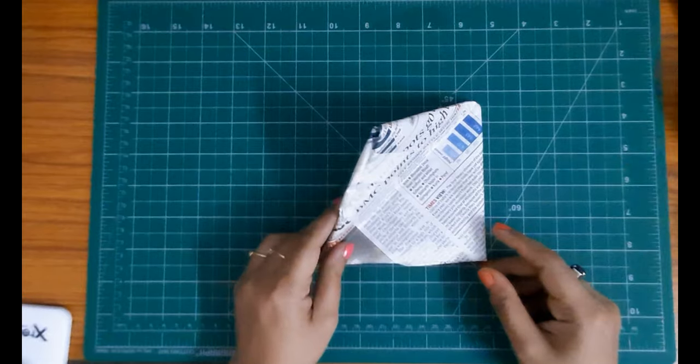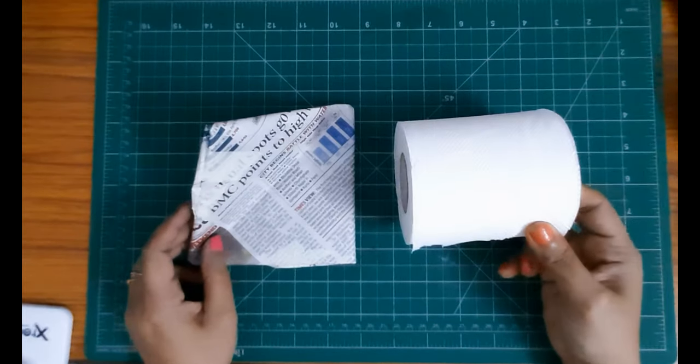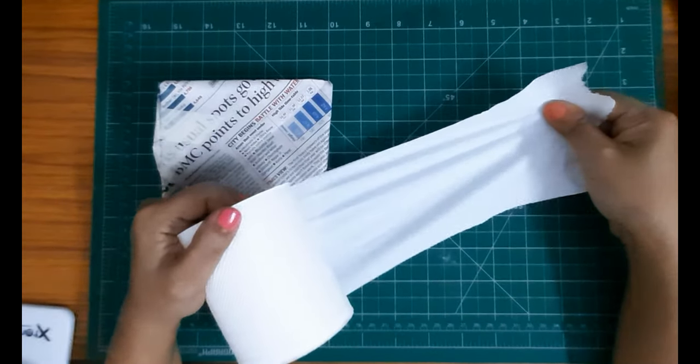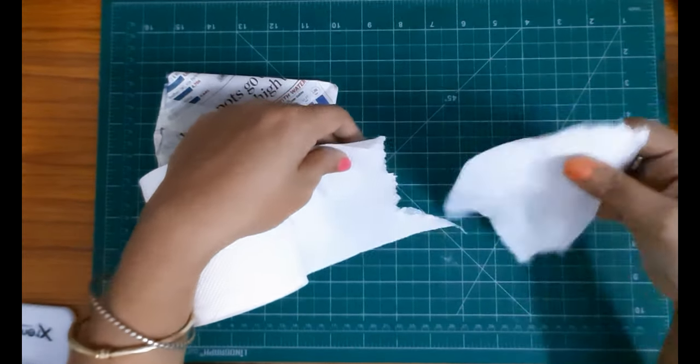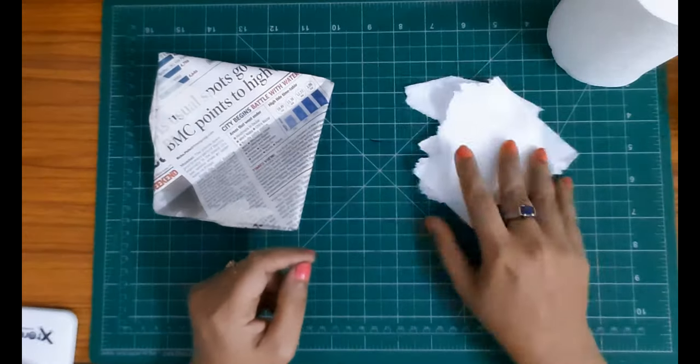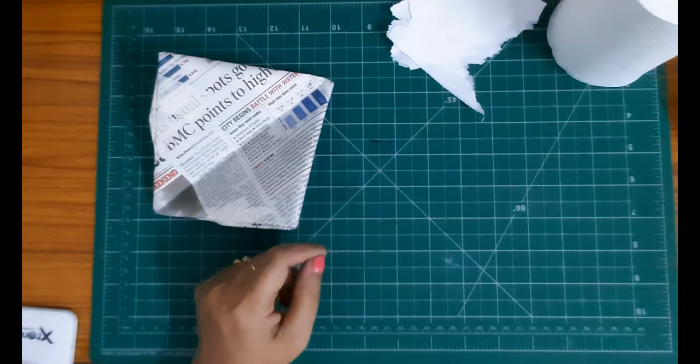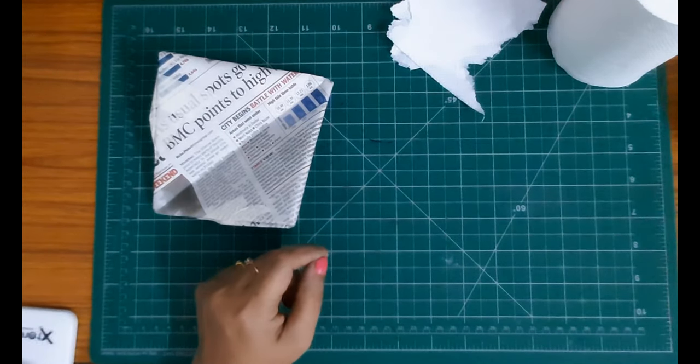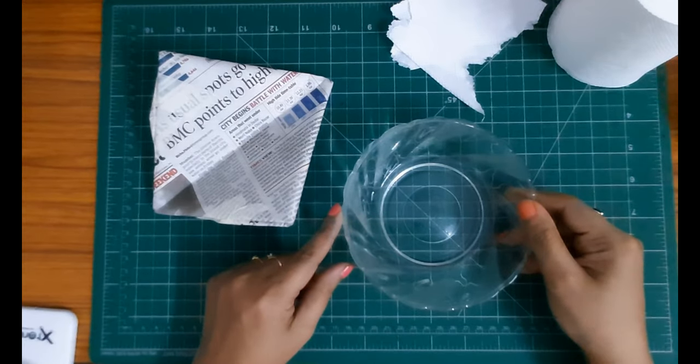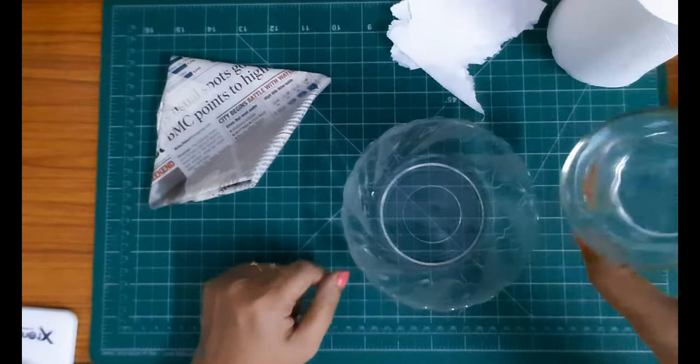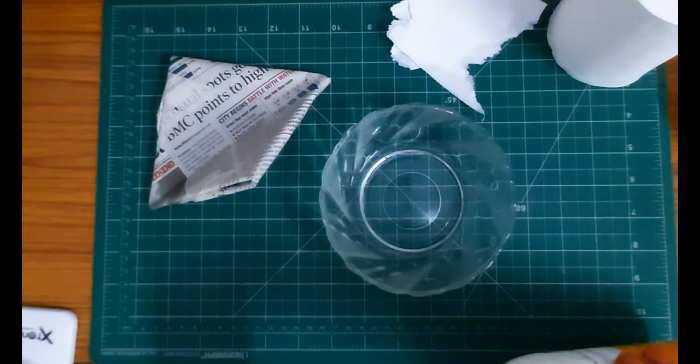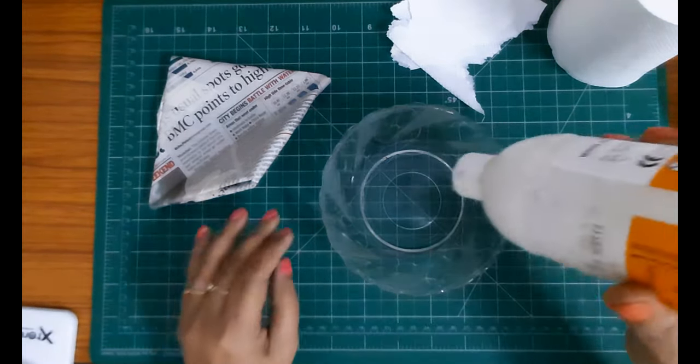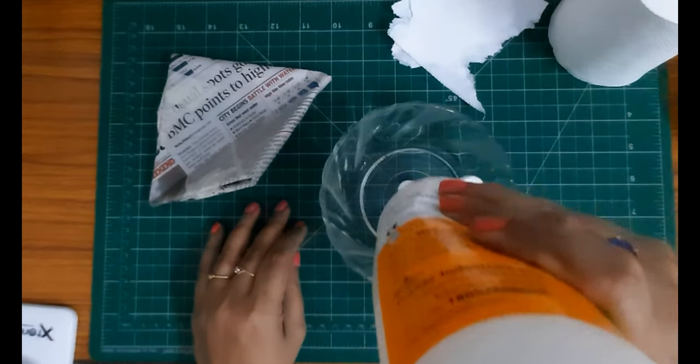So I have a tissue roll here. Basically, I'm going to tear them into small strips like this. Next, I'm going to take an empty bowl and pour a little bit of water in it. Then I'm going to add some Fevicol - equal parts of water and equal parts of Fevicol is a good idea.